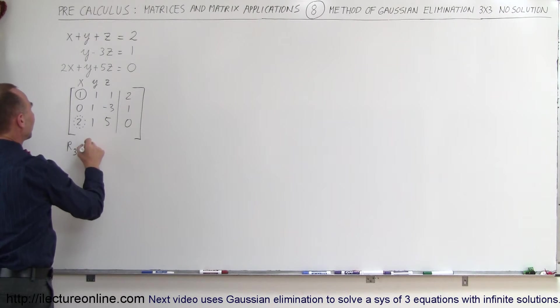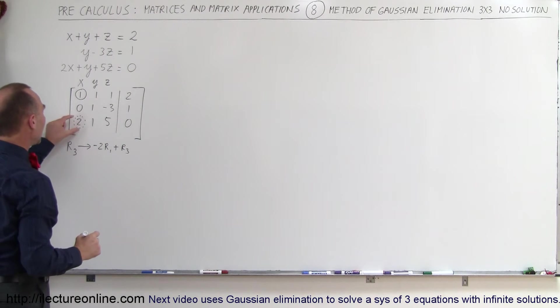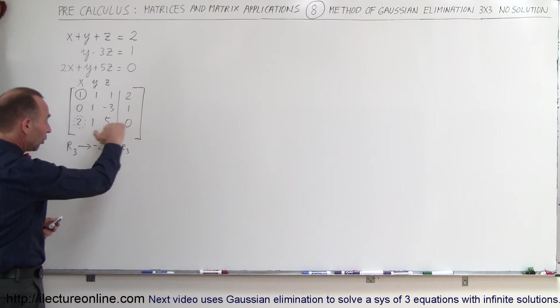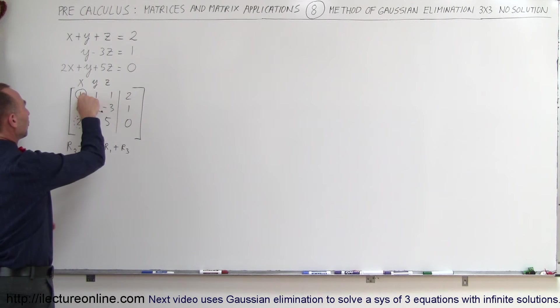We take the third row and replace it by the negative of this number times the row that has the 1 in it, and then adding it to the third row. When we do that, that operation will cause that to become a 0. Of course, we have to do this to all the elements on the third row. So negative 2 times 1, that's negative 2, added to 2 gives me a 0.